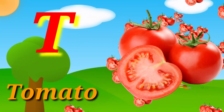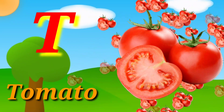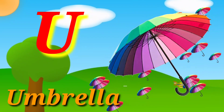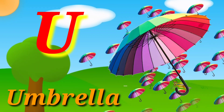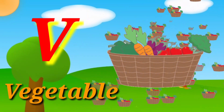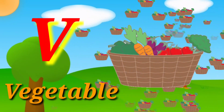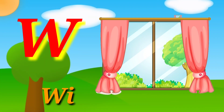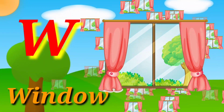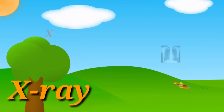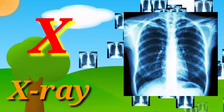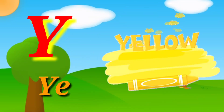T for tomato, U for umbrella, V for vegetable, W for window, X for x-ray.